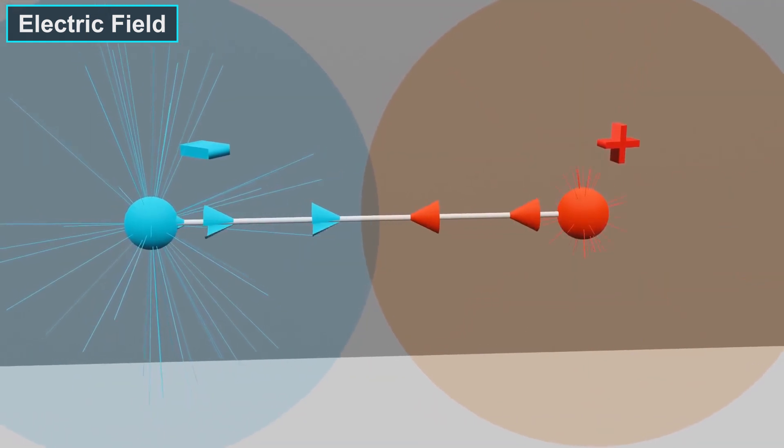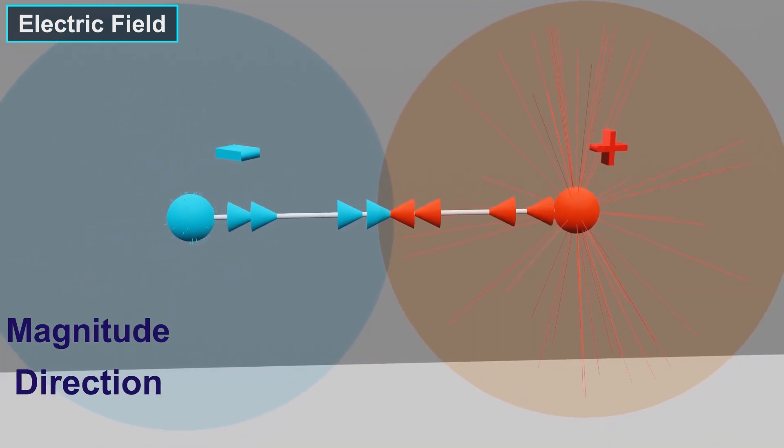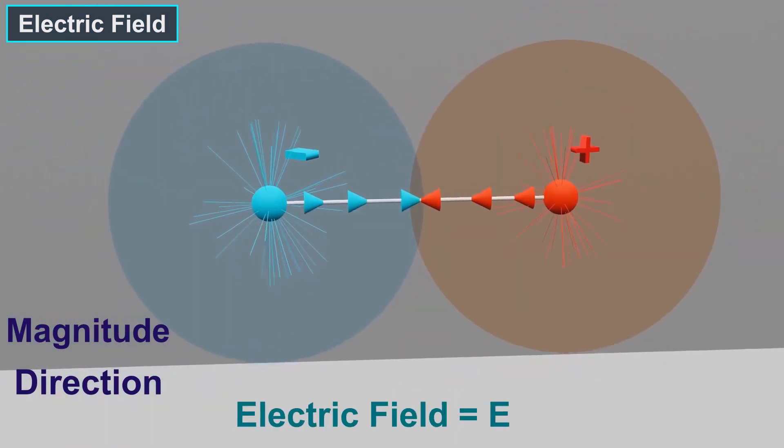It's a vector field, meaning it has both magnitude and direction. We denote the electric field with the symbol E.